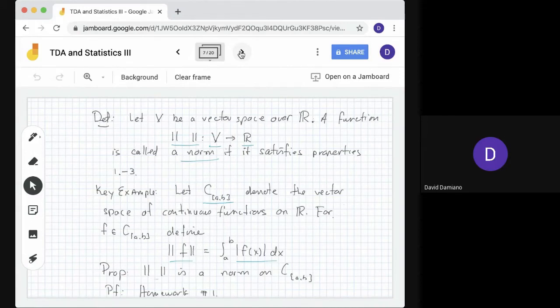The proposition is this function defined this way is a norm on the continuous functions on [a,b], and proving it's a norm will be the first homework problem for Friday.